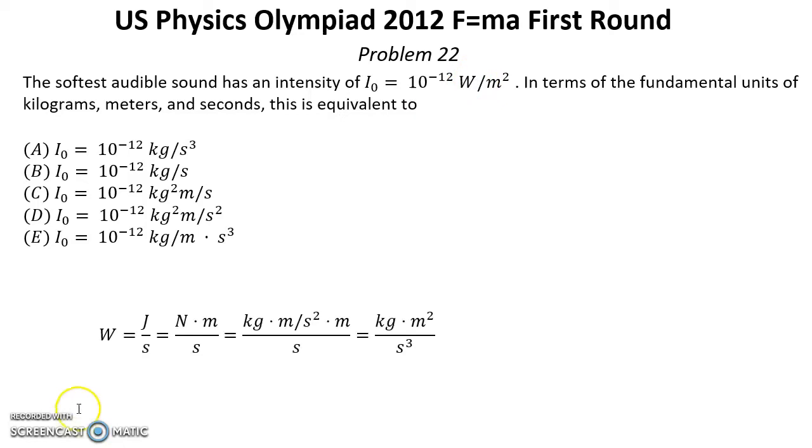To find the units in SI system for this intensity we need to convert watts to fundamental units. Power equals Joules per second. Joules equal Newton by meter. Newton equals kilogram by meter per second squared. Finally that equals kilogram by meter squared over second to the power 3. And finally I0 equals 10 power negative 12 kilogram per seconds cubed. That's answer A.